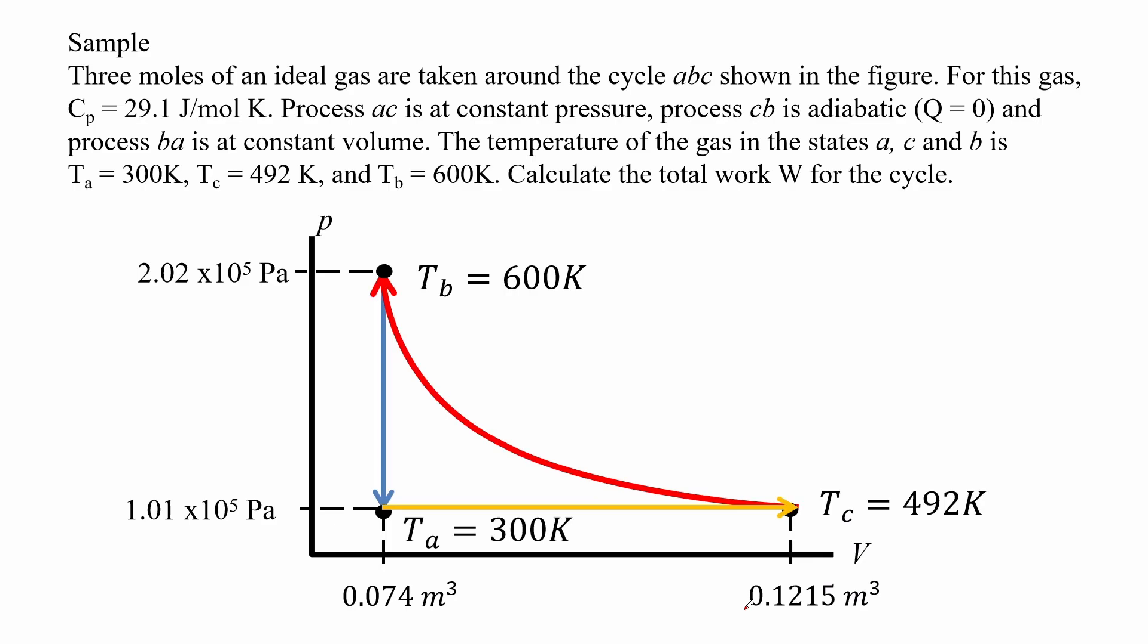Process AC is at constant pressure or isobaric, process CB is adiabatic, and process BA is at constant volume or isochoric. The temperature of the gas in the states A, C, and B is TA equal to 300 Kelvin, TC is equal to 492 Kelvin, and TB is equal to 600 Kelvin. Calculate the total work W for the cycle.